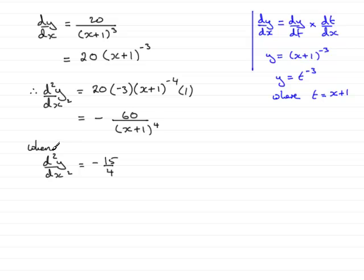So when we have this particular situation, we now have -60 over (x+1) to the power 4 equals -15/4. So we'll just put that in there as -60/(x+1)⁴ equals -15/4. Well, clearly the negatives cancel one another out.